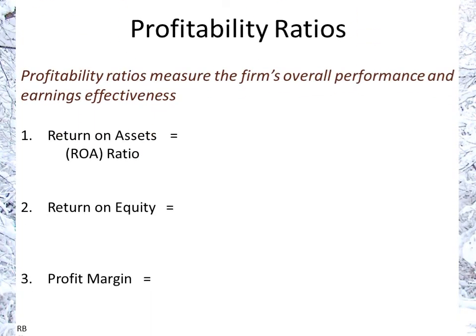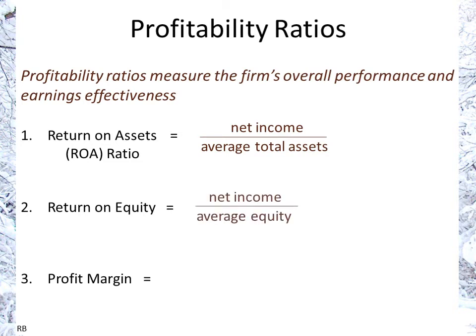Profitability ratios measure performance and earnings effectiveness. Return on assets is net income over average total assets. Return on equity is net income over average equity. Profit margin — also called return on sales — is net income over revenues. Note that like activity ratios, these mixed ratios also use average balance sheet values when combined with income statement items.